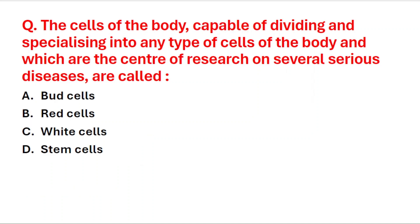Next question: the cells of the body capable of dividing and specializing into any type of cell, which are the center of research on several serious diseases, are called — A: bud cells, B: red cells, C: white cells, D: stem cells. These cells are stem cells, so option D is the right answer.